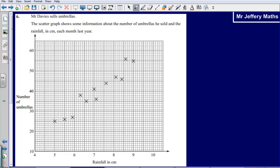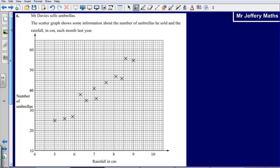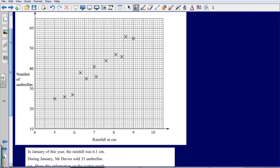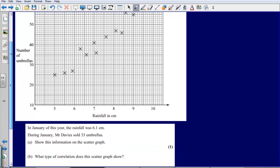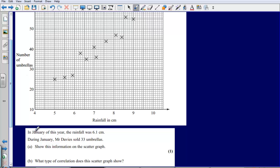Let's take a look at a second example. Here we have another scatter graph, this time it's about umbrellas and rainfall in centimeters. So first of all, in January of this year the rainfall was 6.1 centimeters, during January Mr. Davies sold 33 umbrellas.